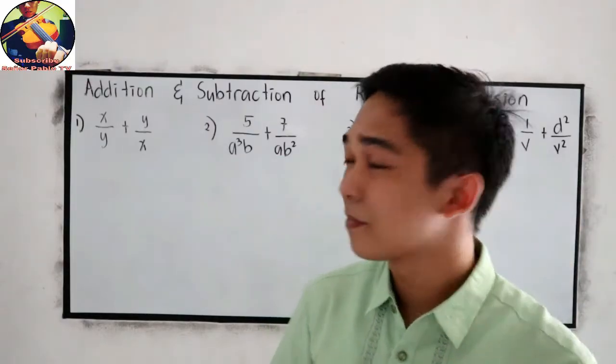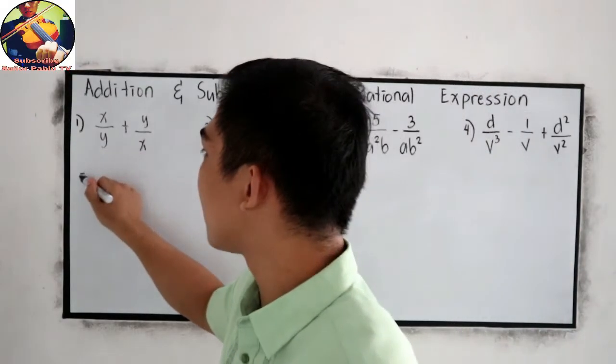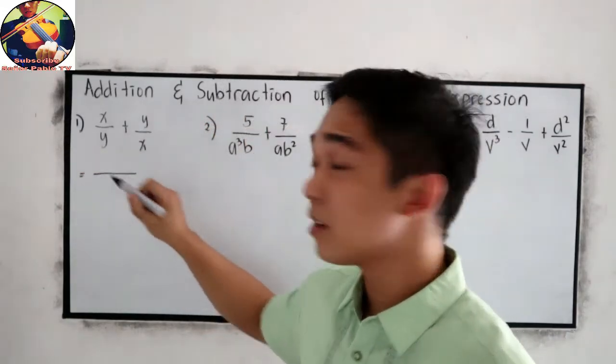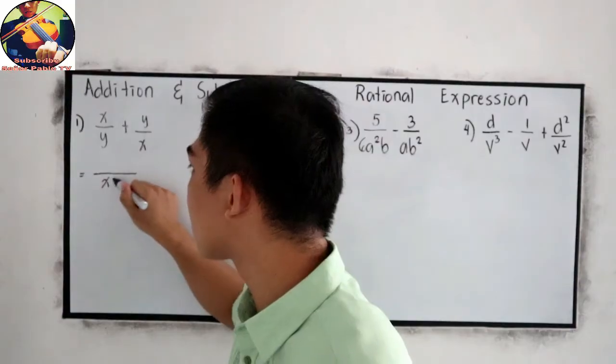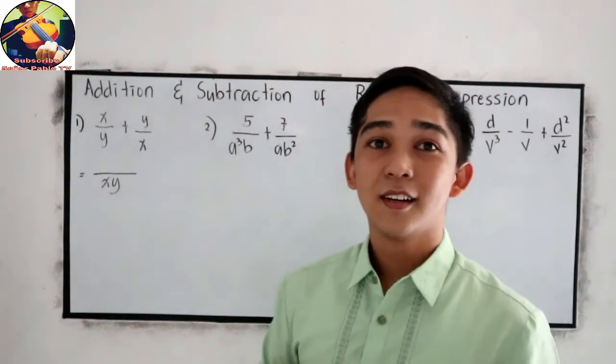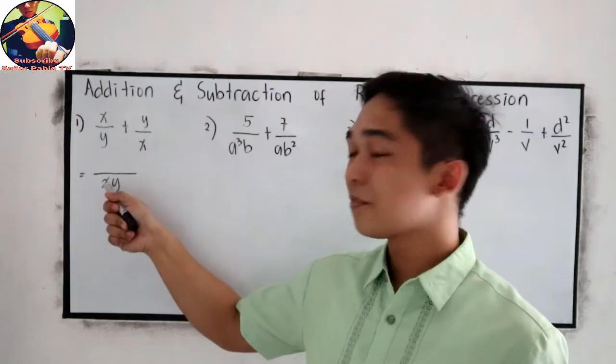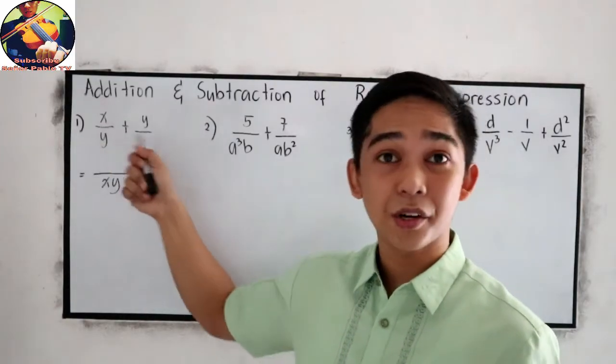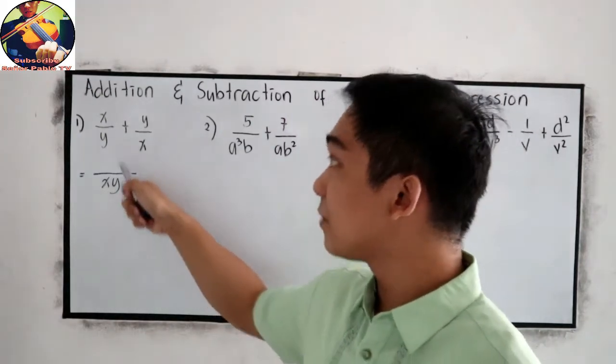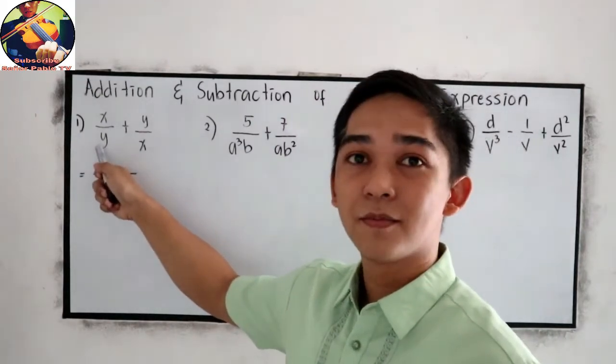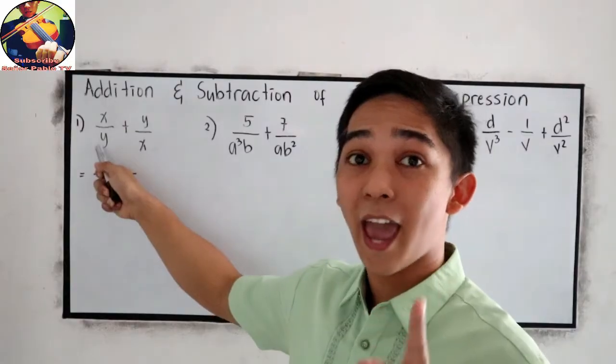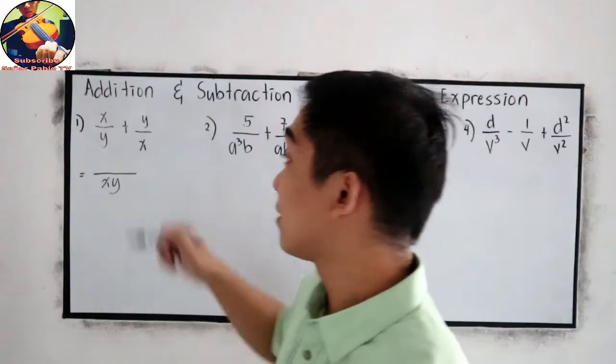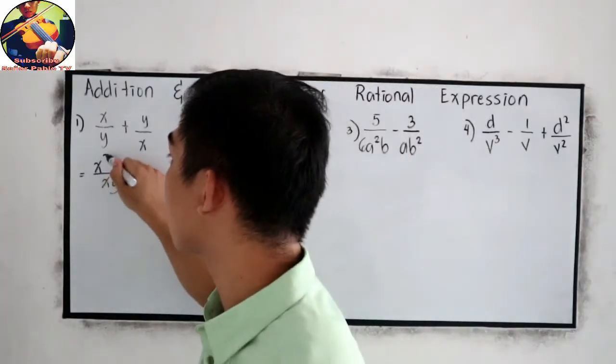Our LCD is, since our denominator is x, y, so x, y. Now, divide the LCD to the denominator of each term. x, y divided by y, that is x. So x times x, that will give us x squared.